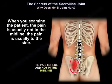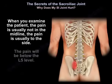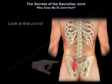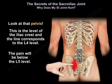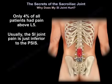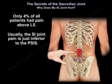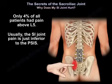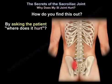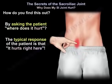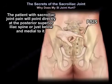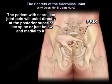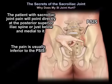When you examine the patient, the pain is usually not in the midline — it is to the side and below the L5 level. The iliac crest corresponds to the L4 level. Only 4% of all patients have pain above L5. Usually, the sacroiliac joint pain is just inferior to the posterior superior iliac spine. When you ask the patient where it hurts, they will typically point directly at the posterior superior iliac spine or just below and medial to it.